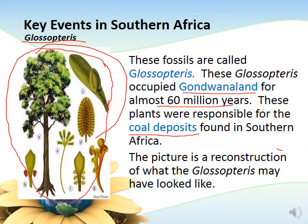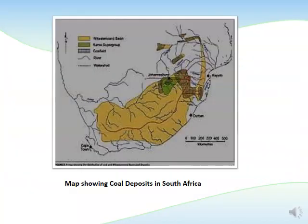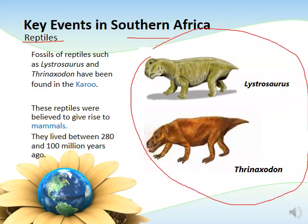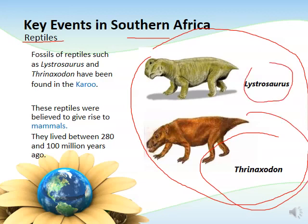The picture is a reconstruction of what they may have looked like. There is also a map showing the coal deposits in South Africa as part of Gondwana land. Other fossil evidence in southern Africa includes fossils from the kingdom Animalia — specifically reptiles: Lystrosaurus and Thrinaxodon, believed to be the ancestors of mammals, having lived between 280 and 100 million years ago according to their fossil records.